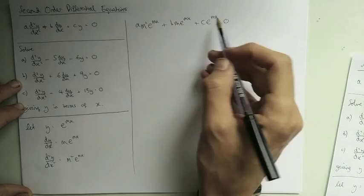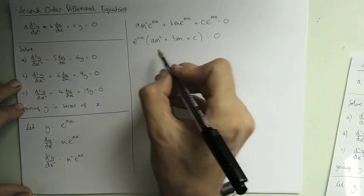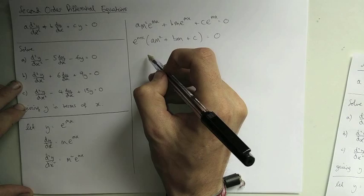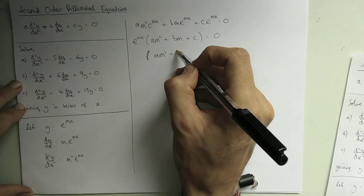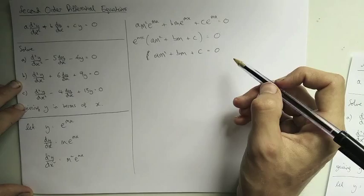Once we've done that, we can see that e^(mx) appears in every term. Since exponentials are always positive, we can divide through by it. This leaves us with am² + bm + c = 0. By doing this substitution and plugging it in, we've taken the differential equation and turned it into a quadratic equation in terms of m.